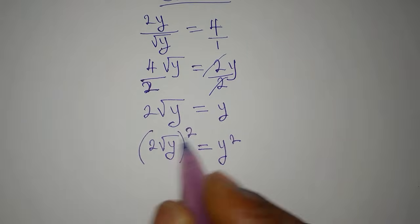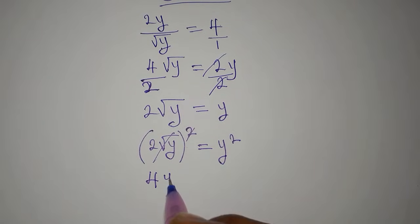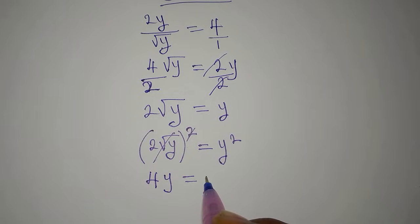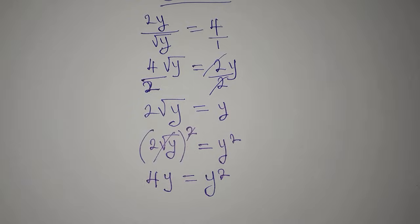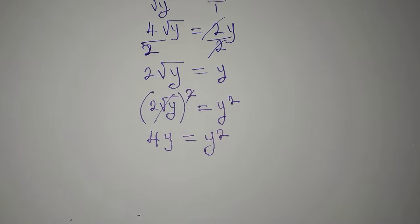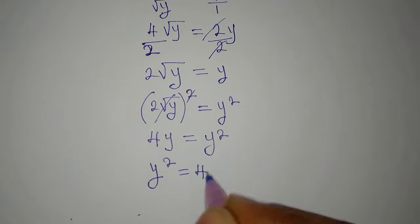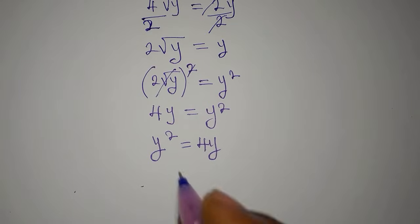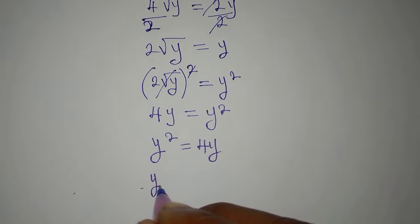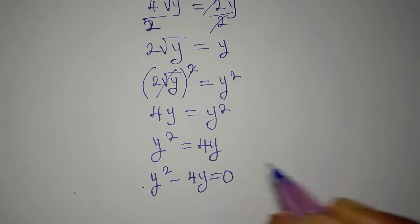Now, 2 squared is 4, so we have 4y equal to y squared. It is advisable to write the term with the higher power first, so we write y squared equals 4y.